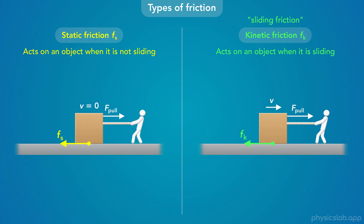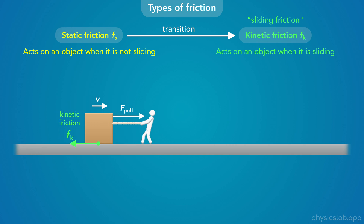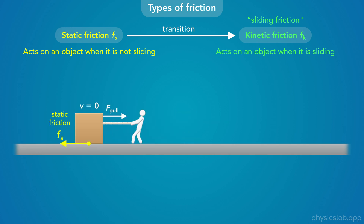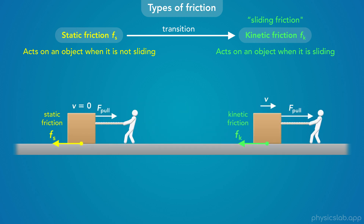So the friction force on an object will either be static or kinetic — it won't be both at the same time. But as we'll learn in another video, the friction force can transition from static friction to kinetic friction. If you pull on this box but it doesn't move, the friction force is static friction. But if you pull hard enough, then the box will eventually start to move. At that moment, the friction force changes from static friction to kinetic friction. Each type of friction behaves in a slightly different way, and it turns out that there is a different coefficient of friction for each type, even when the surfaces are the same. In the next few videos, we'll learn more about each type of friction and this transition from static friction to kinetic friction.